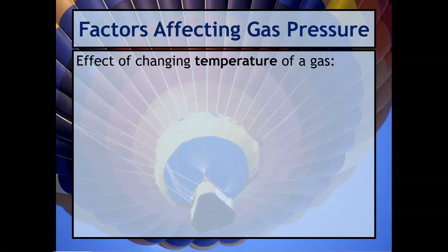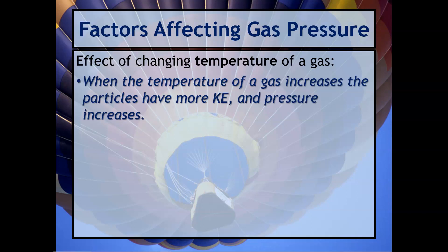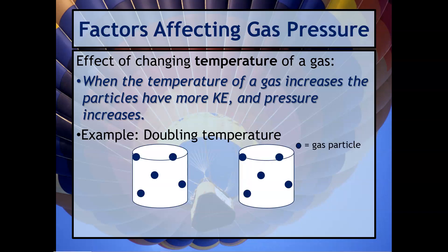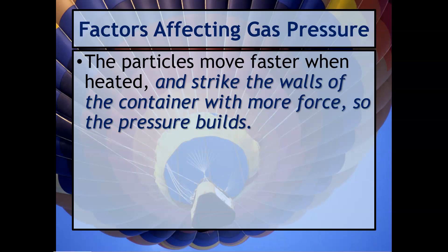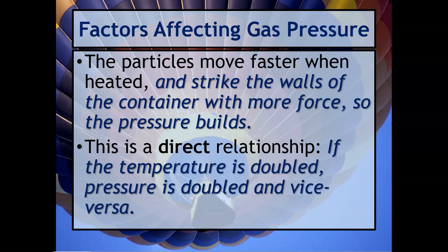Let's now talk about changing temperature. When you increase the temperature of a gas, the particles have more kinetic energy, and we see the pressure increase. For example, keeping the same volume, if the left container is at 298 Kelvin — around room temperature — and the right is at 596 Kelvin, we have two times the temperature, so we're going to see two times the pressure. When you increase temperature, the particles move faster and strike the walls of the container more frequently, causing the pressure to increase. This is a direct relationship: temperature increases and therefore pressure increases.